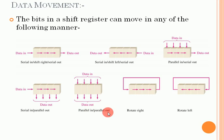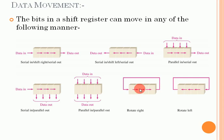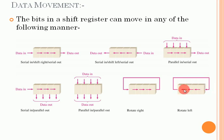In a rotate-right manner, the data goes from left to right and the last bit goes back to the very left side — so the data is rotating to the right. In the rotate-left manner, the data rotates from right to left, and the leftmost bit goes back to the right side. So these are the rotate-right and rotate-left modes.